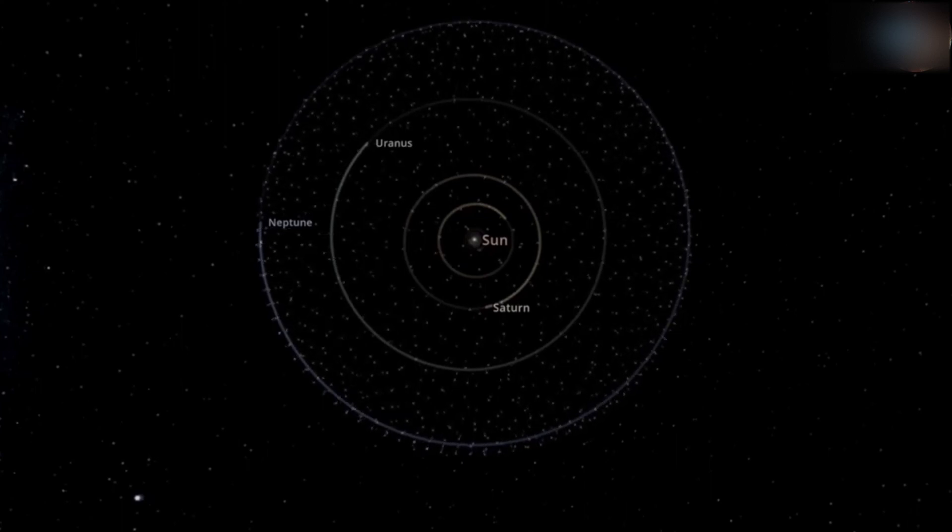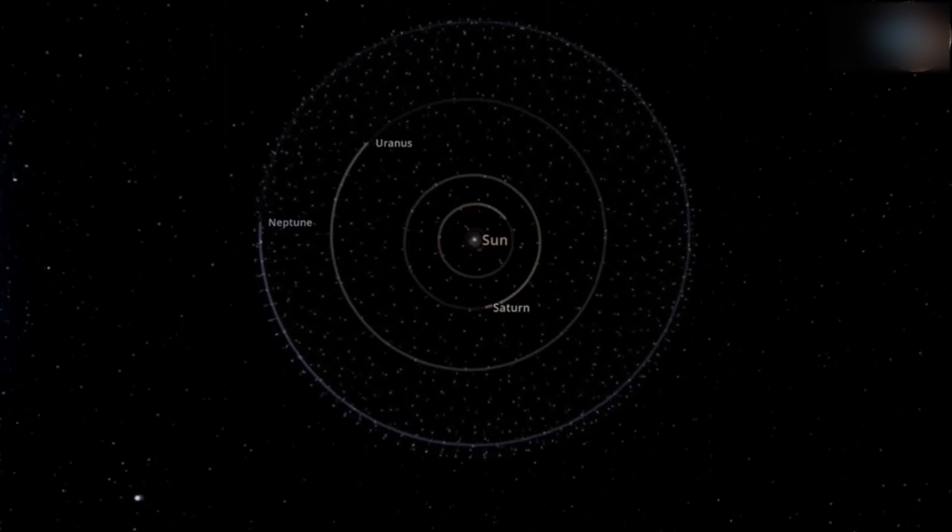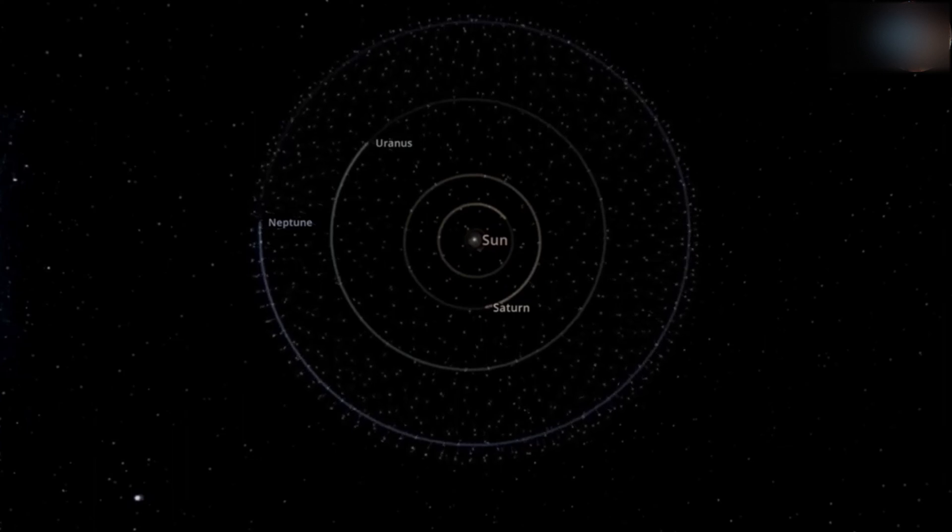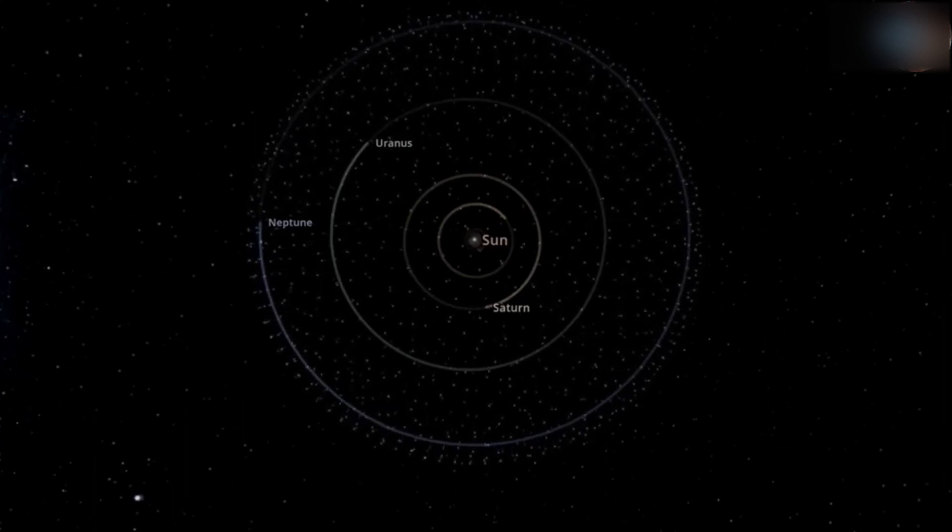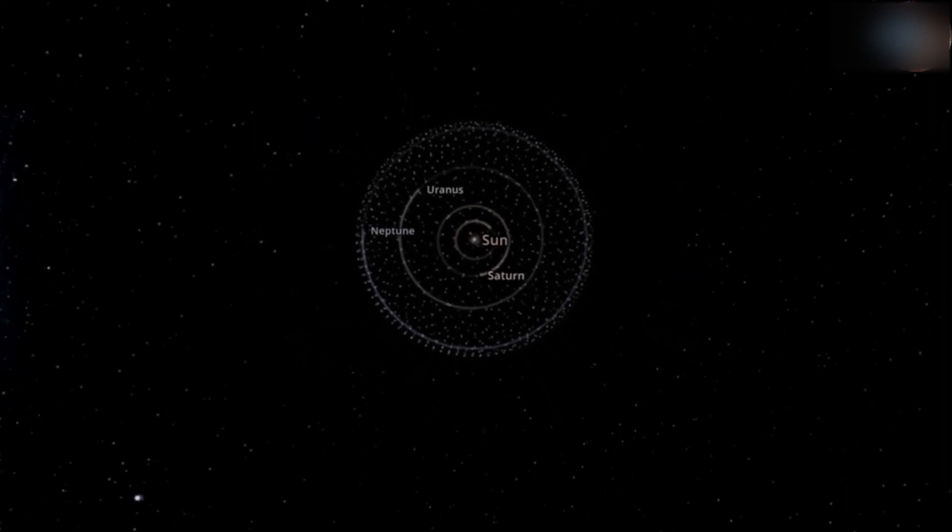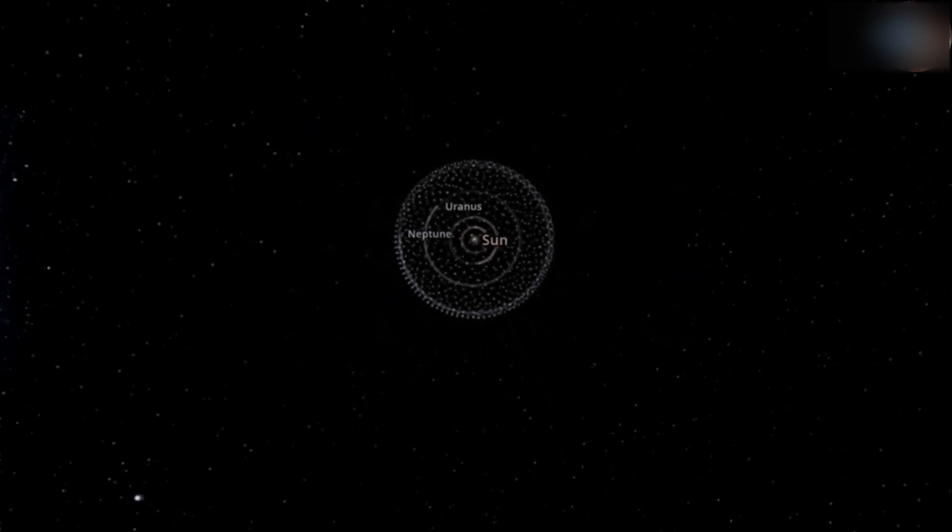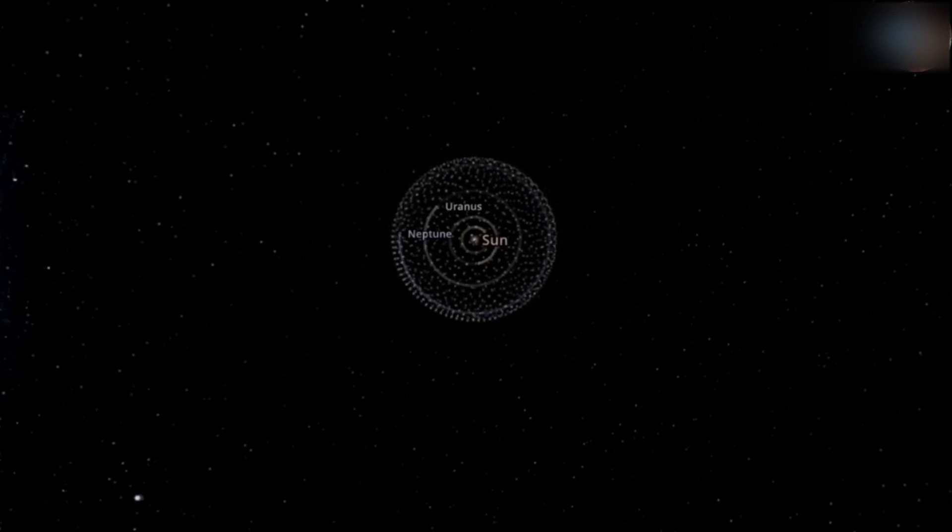As you can see, the light has finally reached Neptune after we increased the speed by a hundred times. Even at this speed, it will take it around 15 days to reach our next closest star, Alpha Centauri. I hope that this video gave you an insight on how the speed of light looks on the cosmic scale.